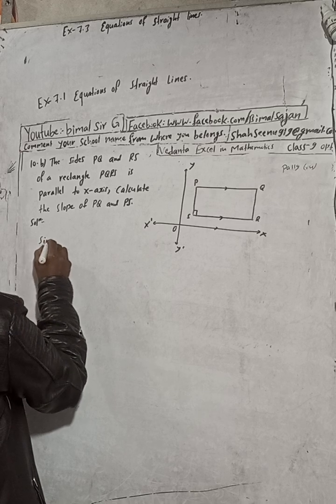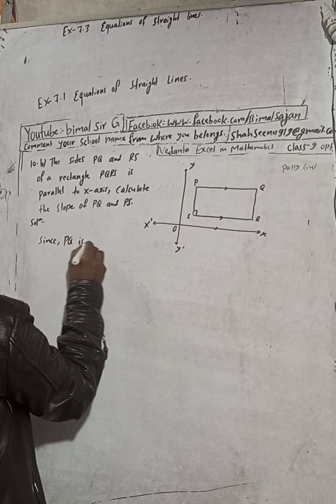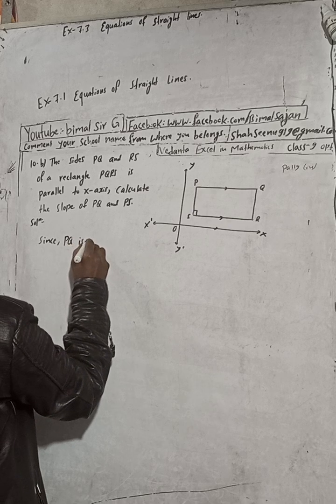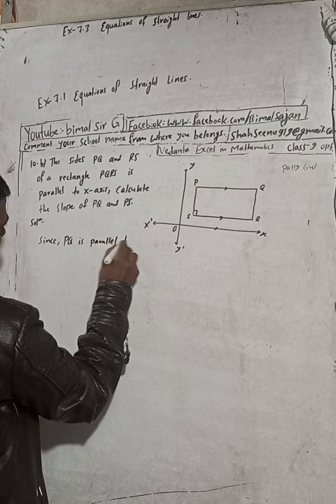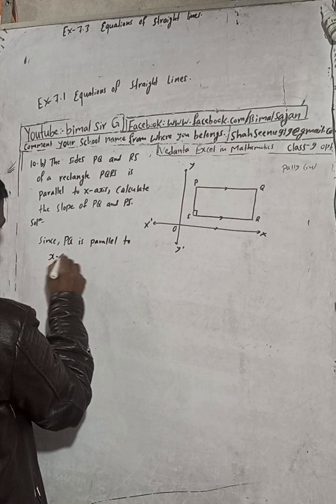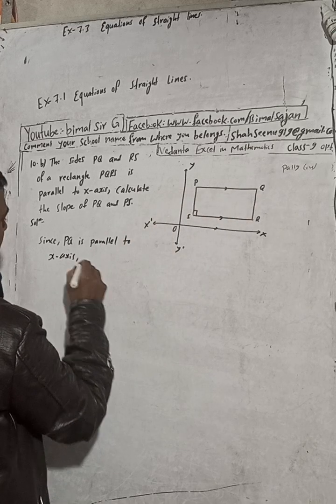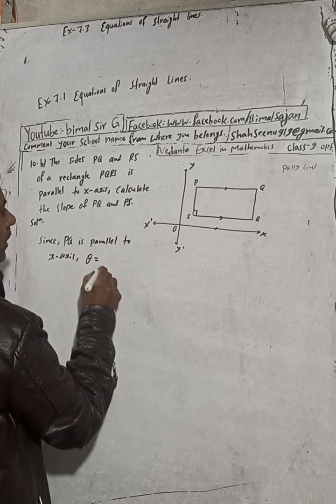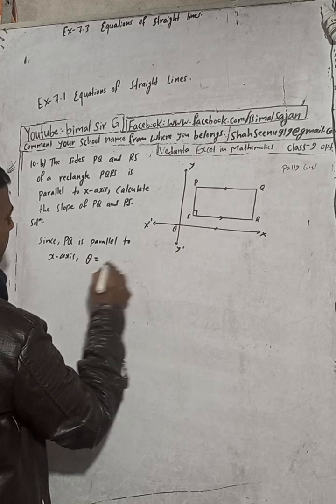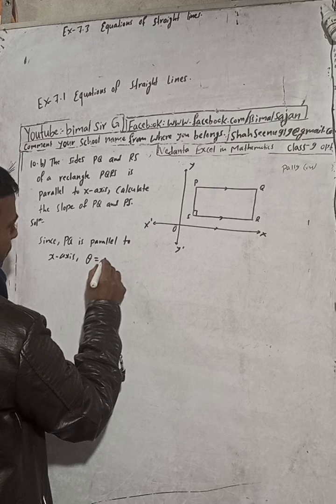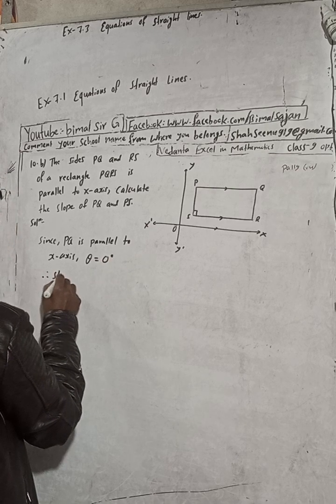Since PQ is parallel to x axis, theta is equal to zero degree. Therefore slope of PQ.